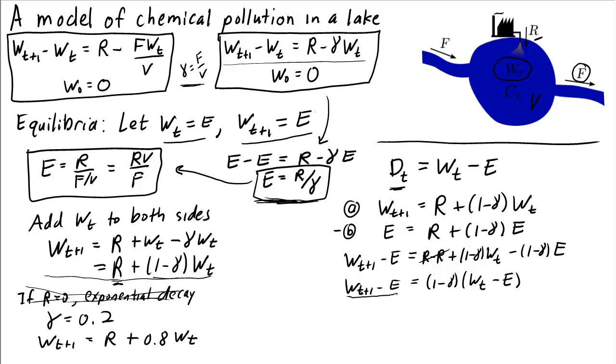Well, w t plus one minus e is just d t plus one, given the equation right here, our definition right here. And w t minus e is just d sub t. So therefore, we have that d t plus one is just one minus gamma times d sub t. And this equation should be very familiar. This is just exponential decay. We know how to solve this. We multiply by one minus gamma in each time step. So d sub t is just one minus gamma to the power of t times the initial condition, d naught.